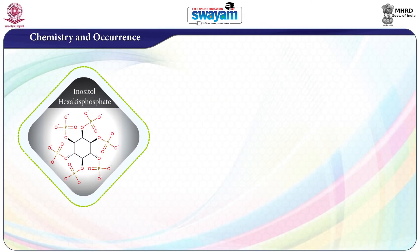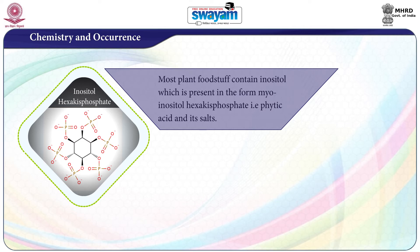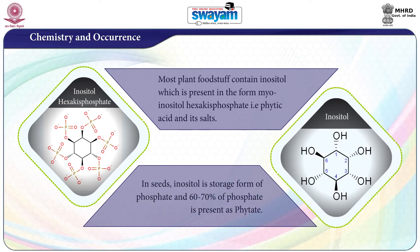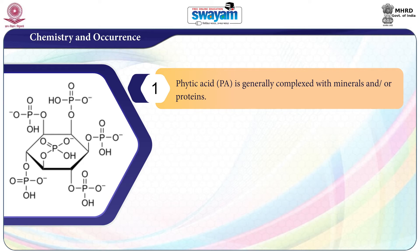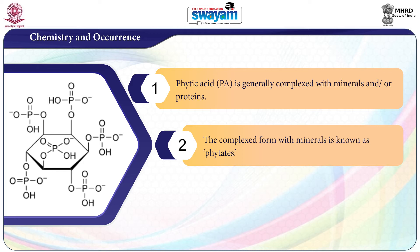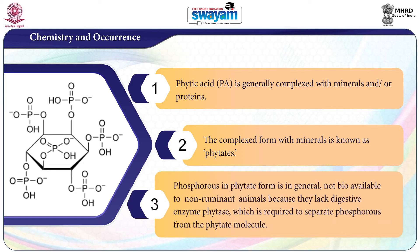Most plant foodstuffs contain inositol, which is present in the form of myoinositol hexakisphosphate, that is phytic acid, and its salts. In seeds, inositol is the storage form of phosphate and 60–70% of phosphate is present as phytate. Phytic acid is generally complexed with minerals and/or proteins; the complexed form with minerals is known as phytates. Phosphorus in phytate form is generally not bioavailable to non-ruminant animals because they lack the digestive enzyme phytase, which is required to separate phosphorus from the phytate molecule.